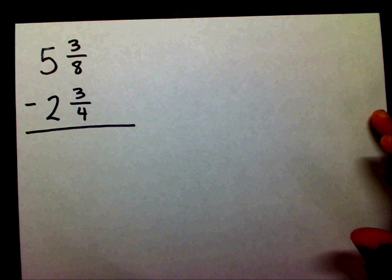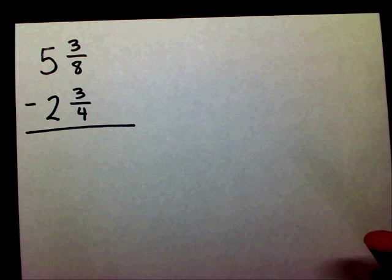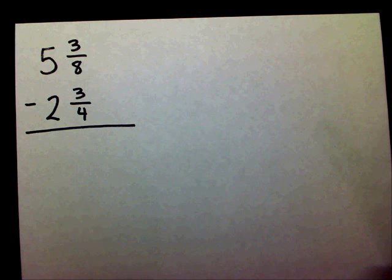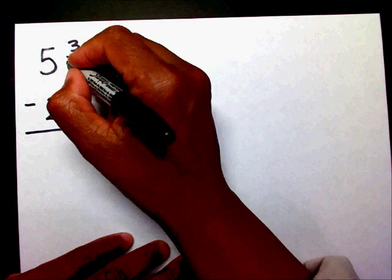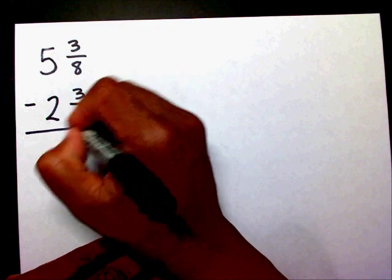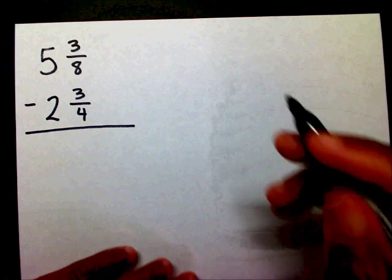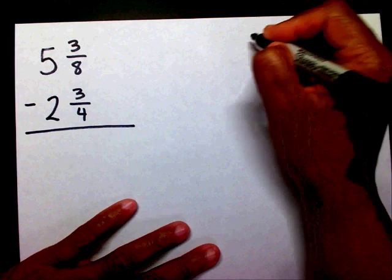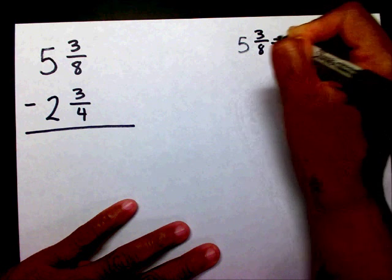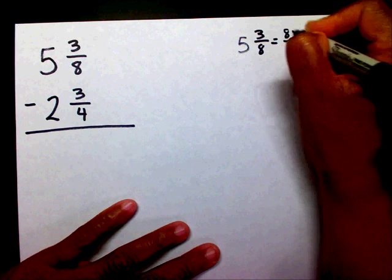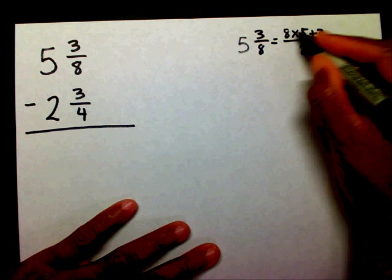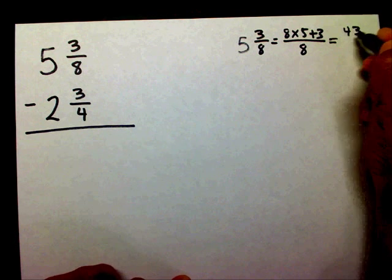I'm going to do the same process that I used last time because once you learn something, it's best to keep that process going and then add maybe one more step. So I'm going to change this 5 and 3 eighths into an improper fraction. So 5 and 3 eighths equals 8 times 5 plus 3. 8 times 5 is 40, plus 3 is 43, over 8.